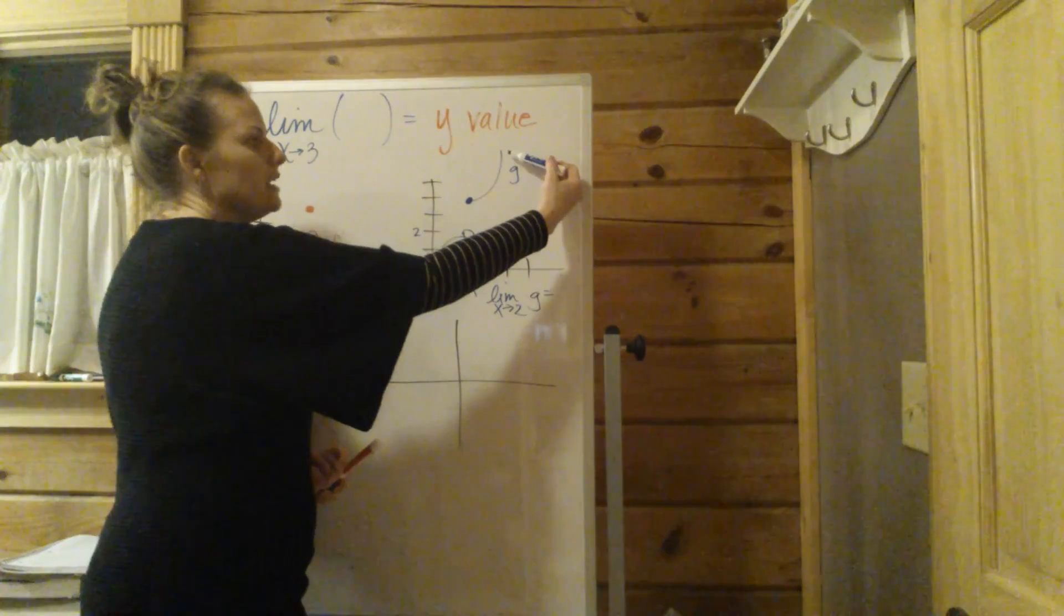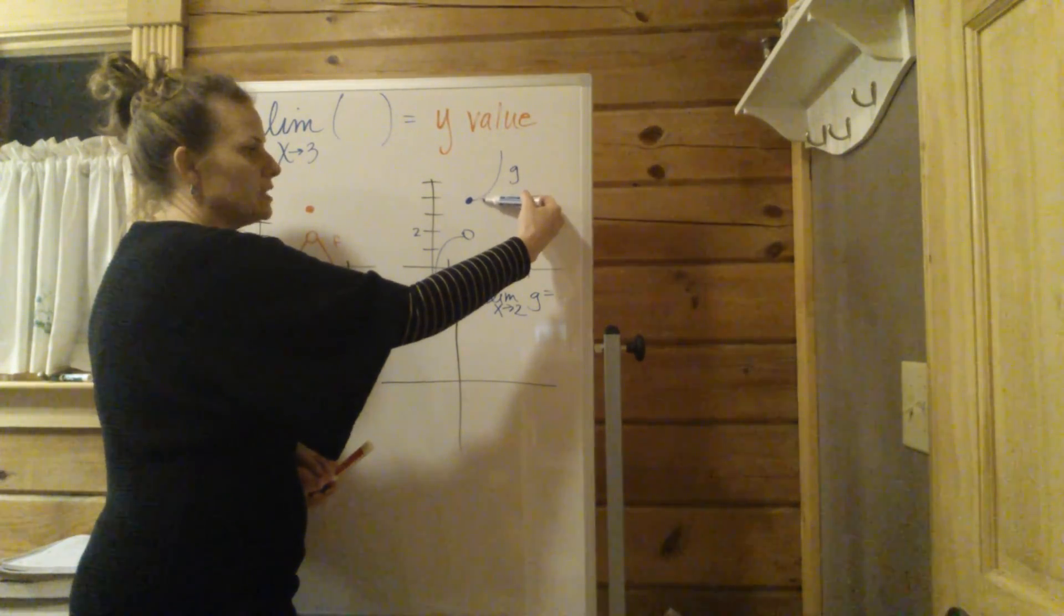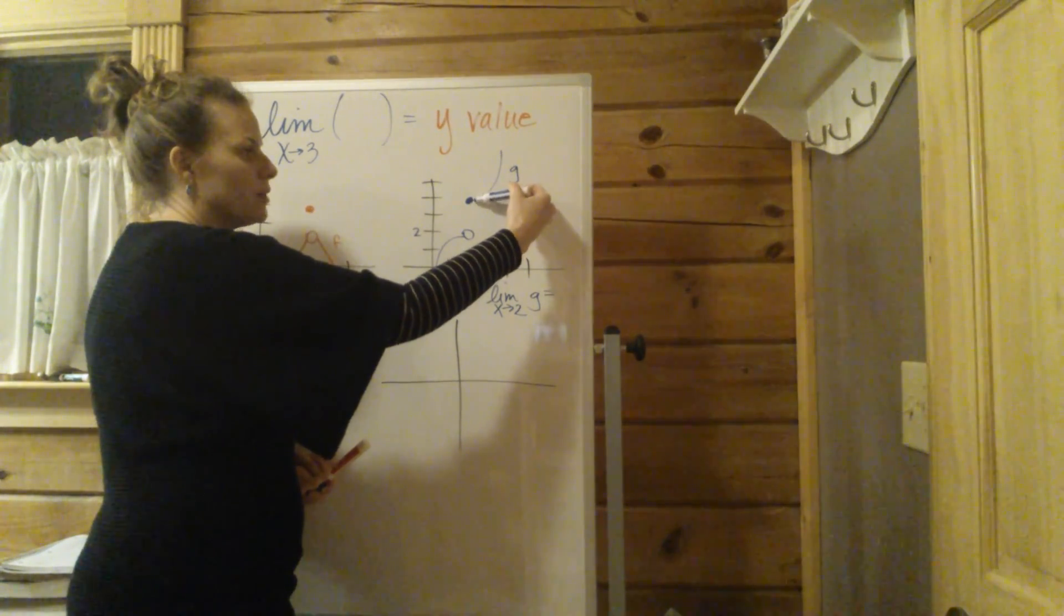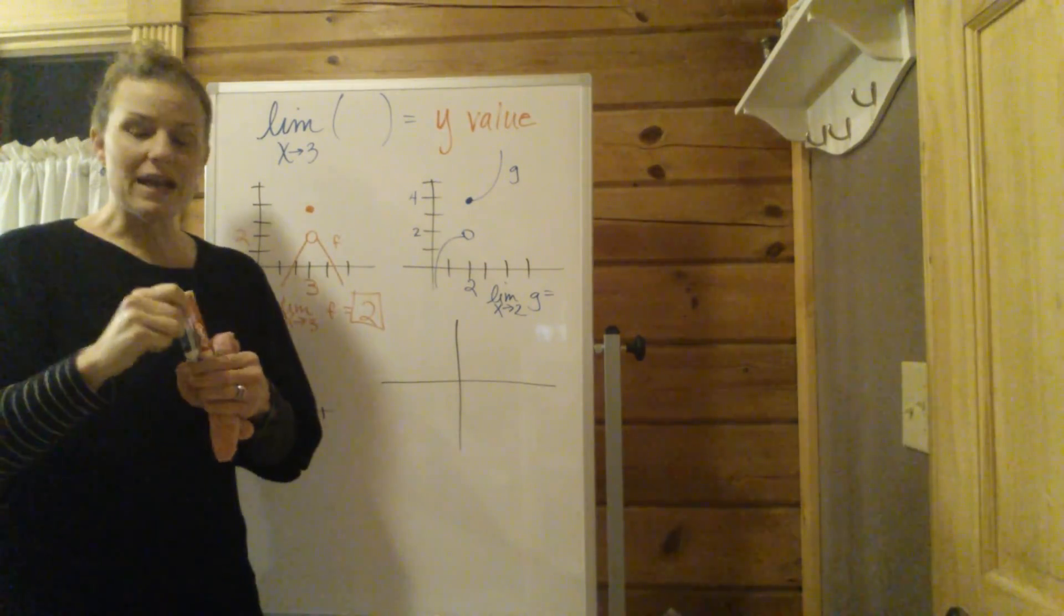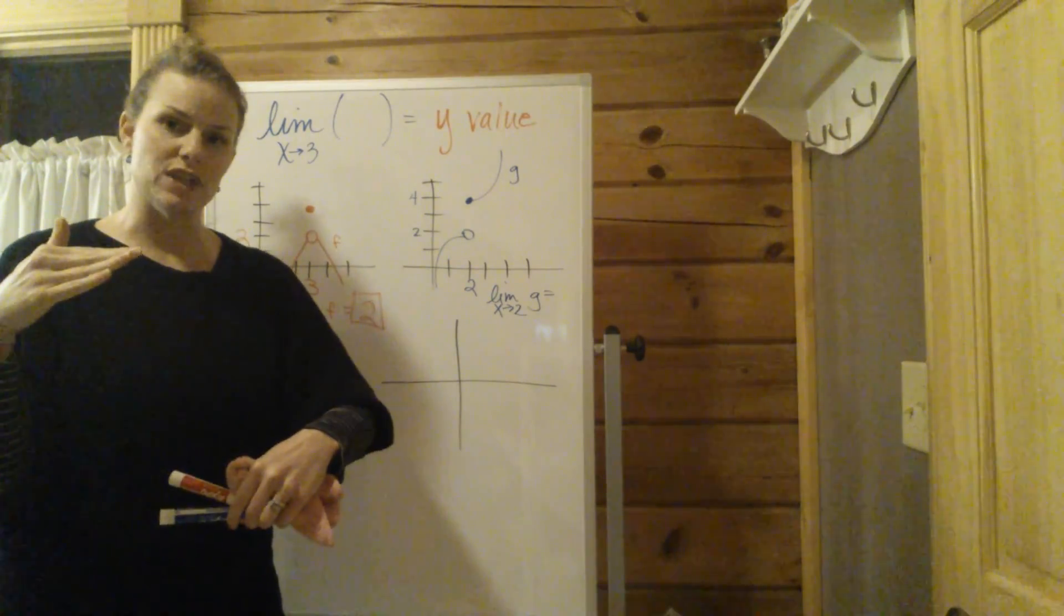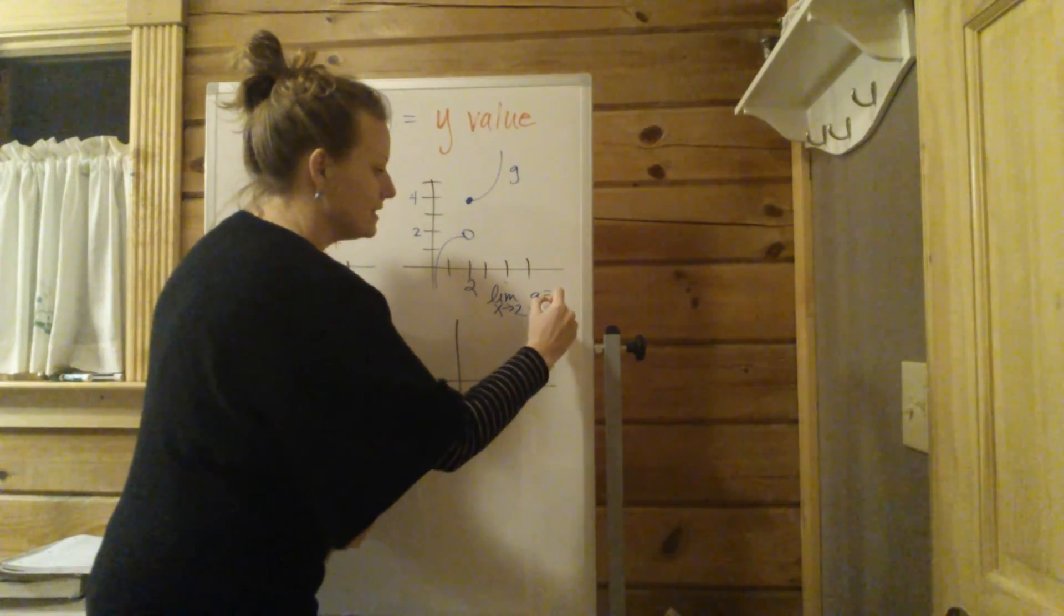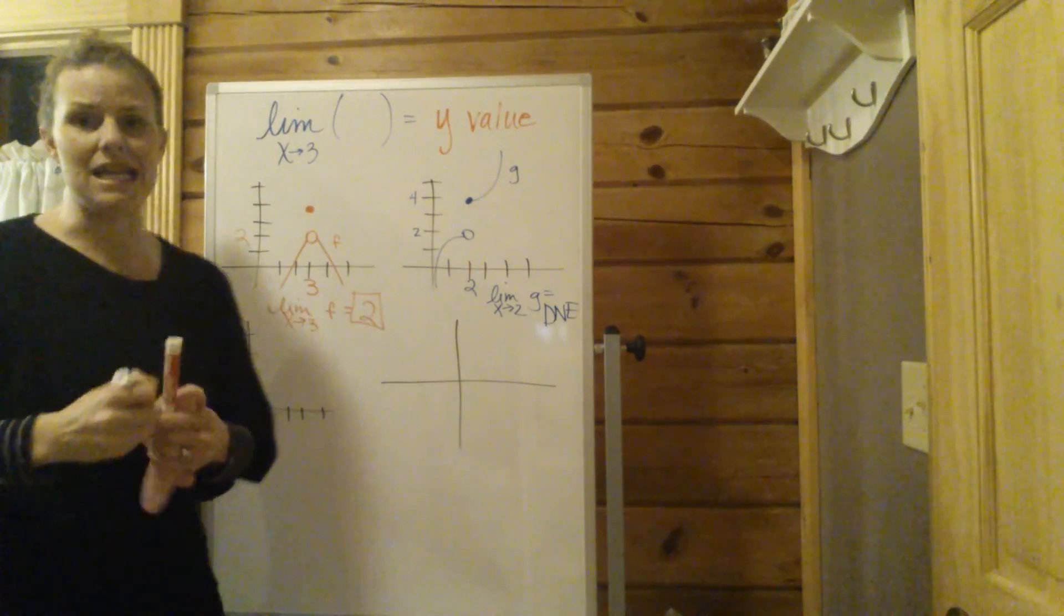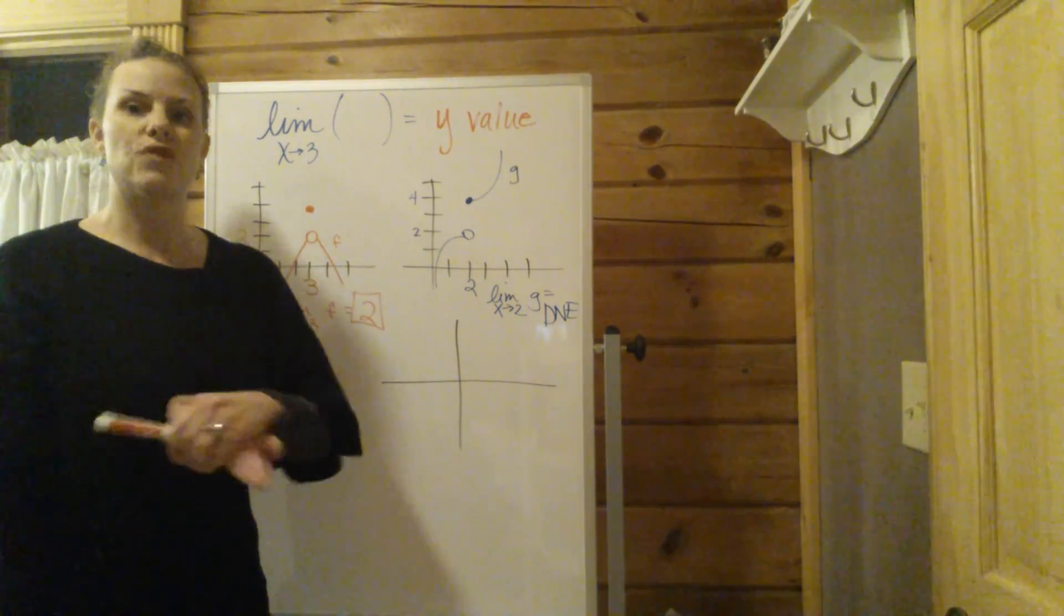But from the right, we're coming in over here, x values are getting closer and closer to 2. So this might be 2.5, 2.1, 2.01. The y values are actually approaching here 4. So if the y values are approaching 2 different numbers from the separate, from the different sides, then this is a situation where the limit does not exist. DNE does not exist if the y values are approaching 2 different things from the separate sides.